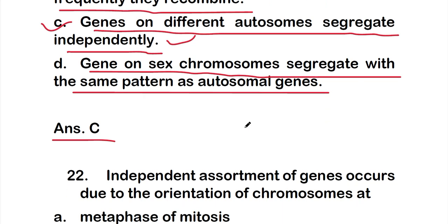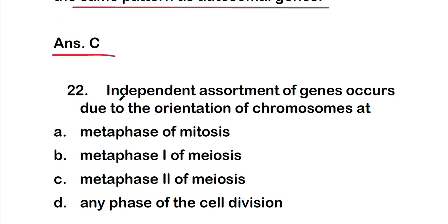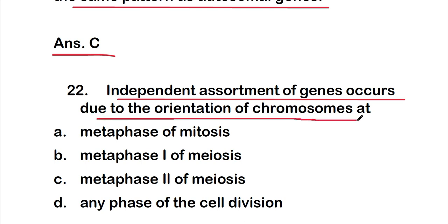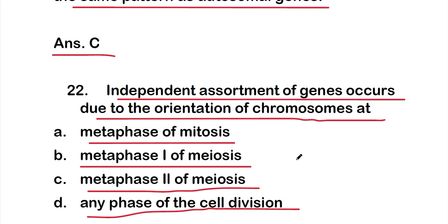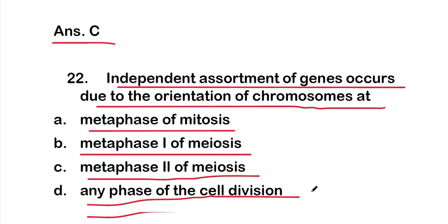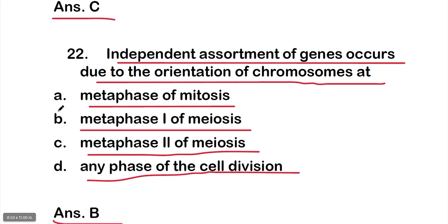Question 22: Independent assortment of genes occurs due to the orientation of chromosomes at — option A: metaphase of mitosis, option B: metaphase 1 of meiosis, option C: metaphase 2 of meiosis, or option D: any phase of cell division. The right answer is option B — metaphase 1 of meiosis.